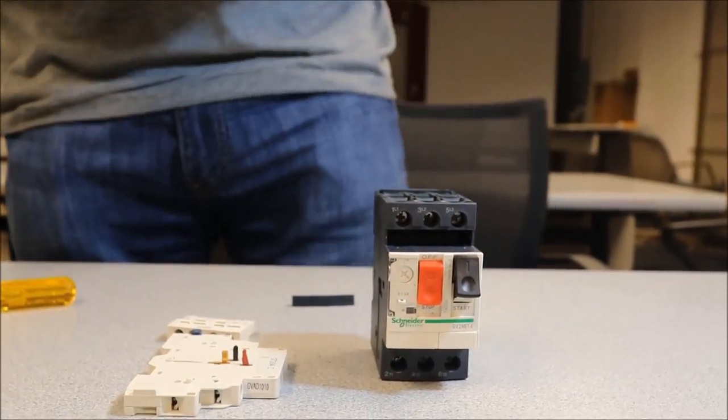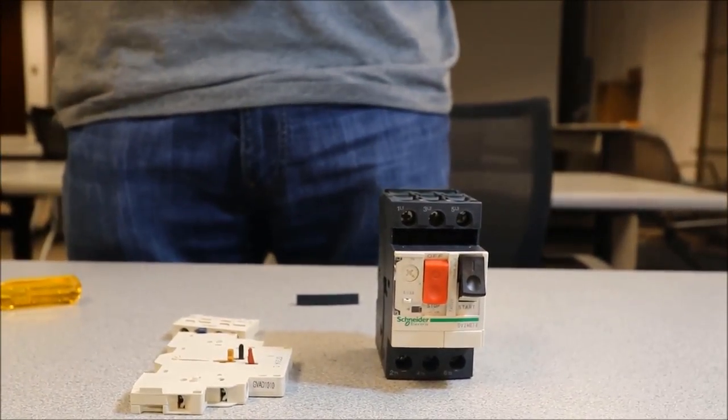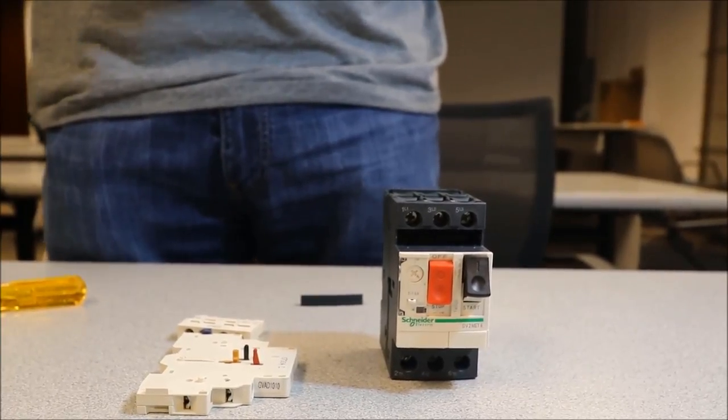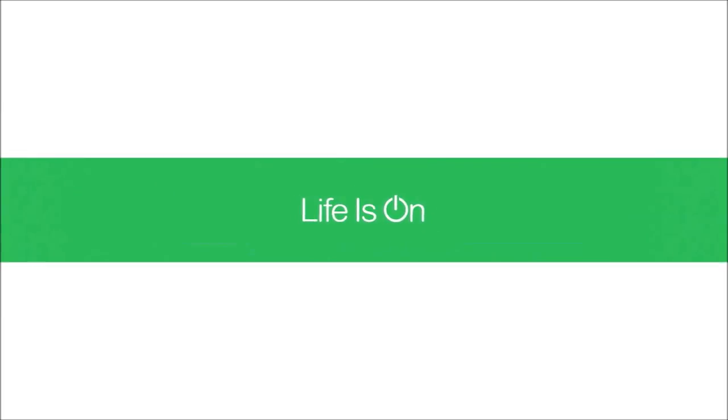And this is how you install the front and the side mount auxiliary contacts for a GV-2M manual starter.